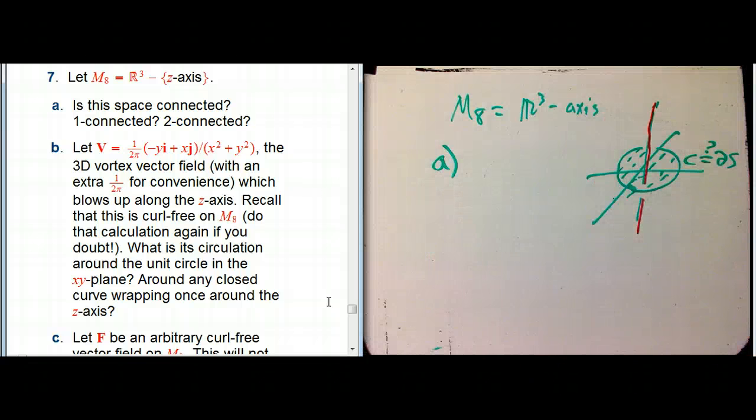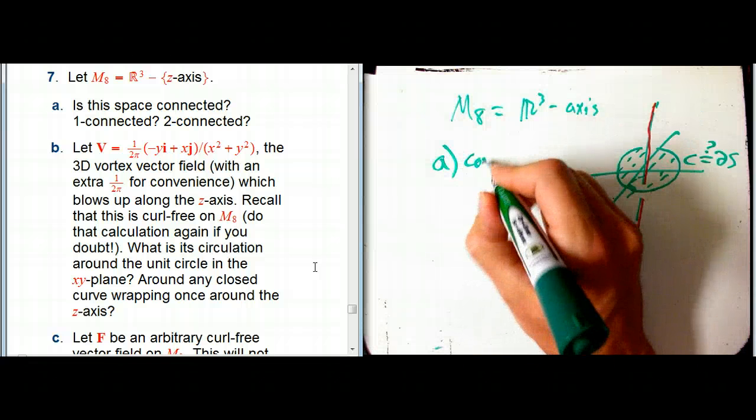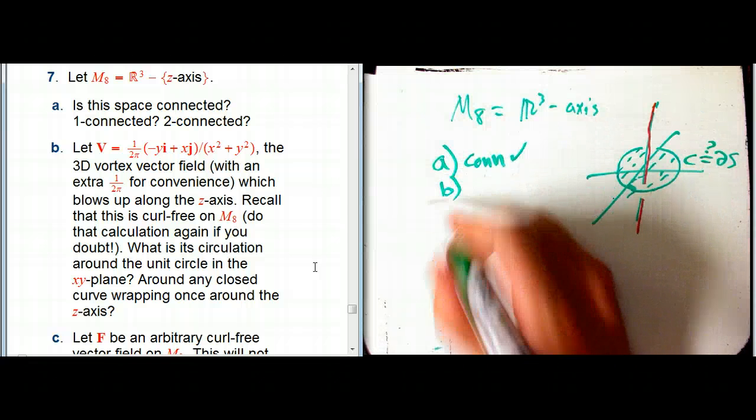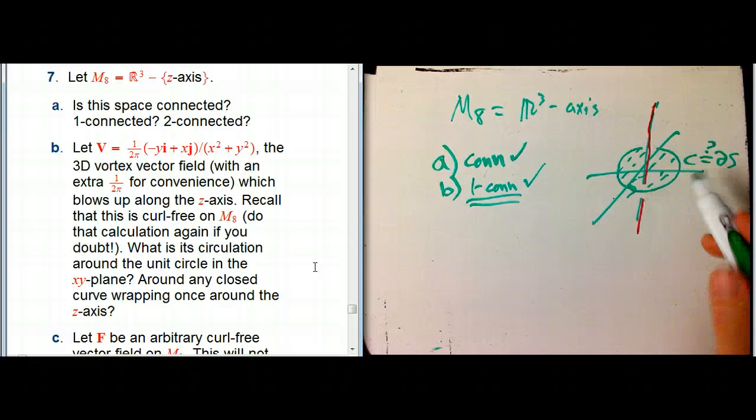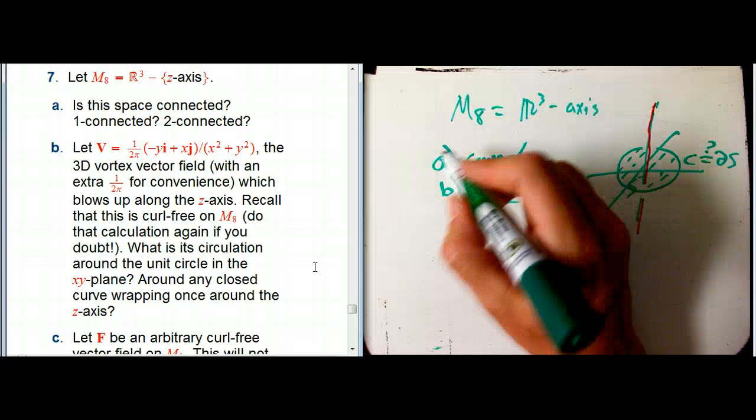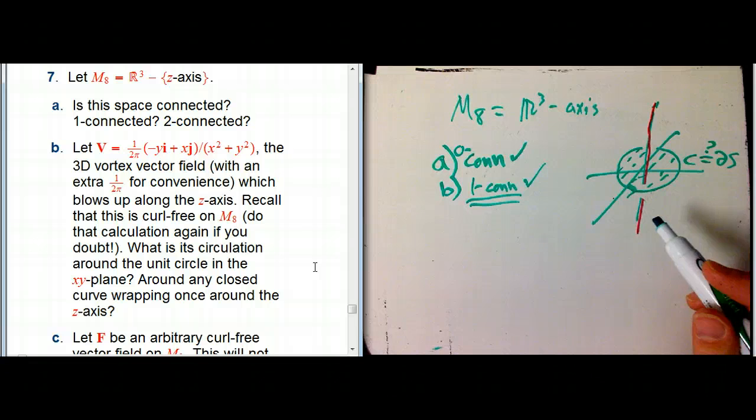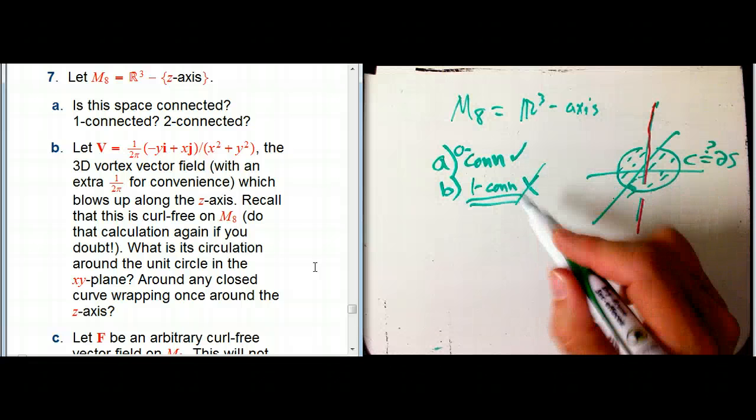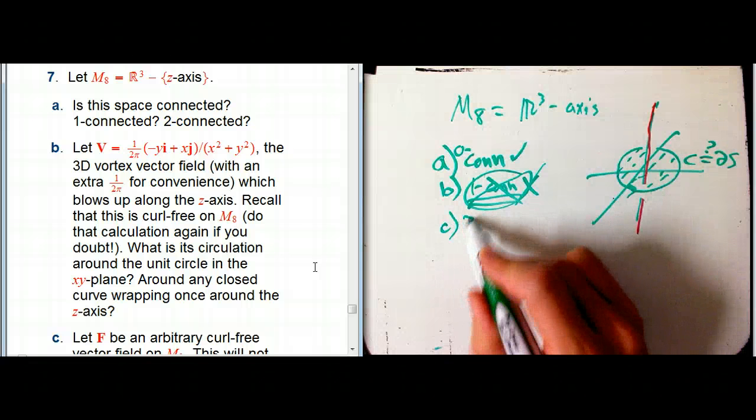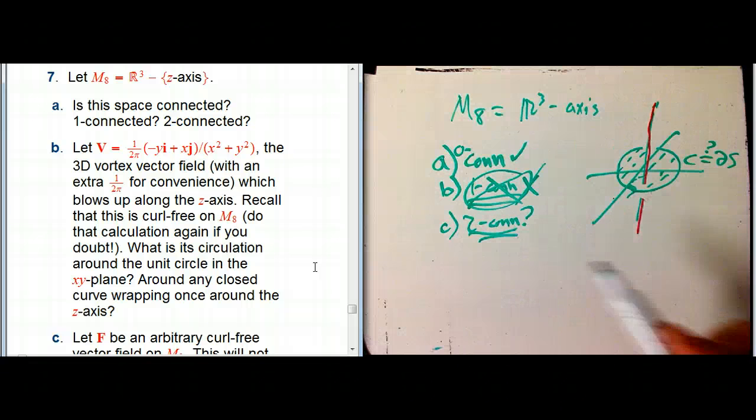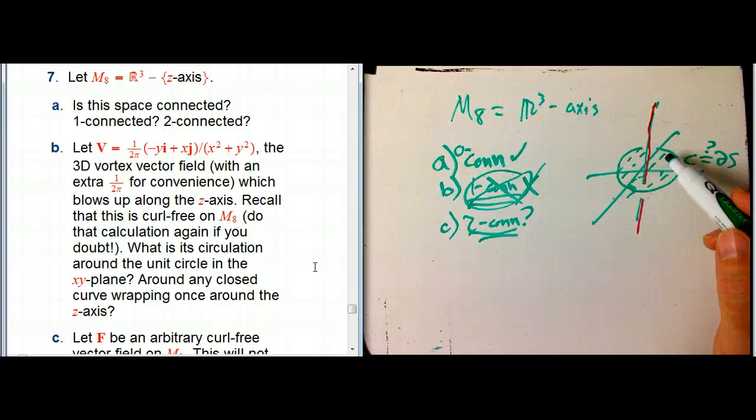So you might want to look at these questions first and pause if you want. It's still connected. I gave that away. It's not one connected anymore. Remember, that's the systematic way for term for zero, for simply connected. In fact, connected, we could even call zero connected. So yeah, don't want to check mark there. It's not one connected because of this example. Here's a tricky one. Is it two connected?